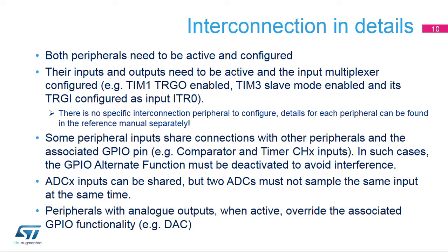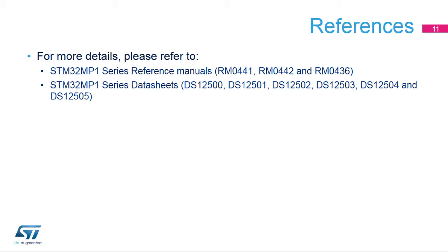Peripherals with active analog outputs override the associated GPIO functionality. Specific details can be found in the specific sections for each peripheral in the reference manual, as well as in the data sheet.